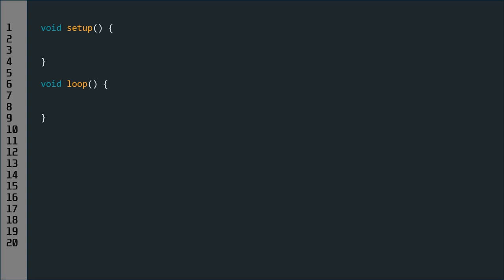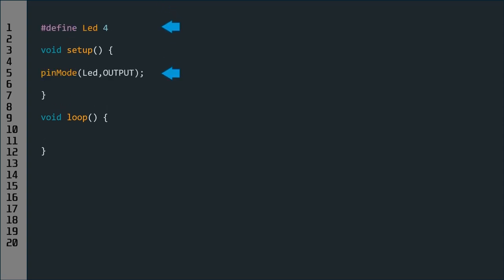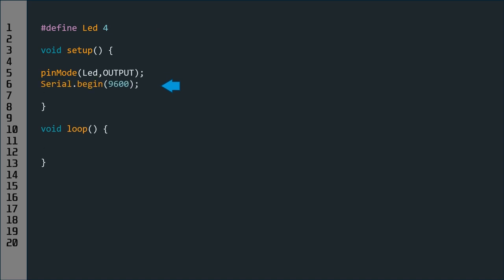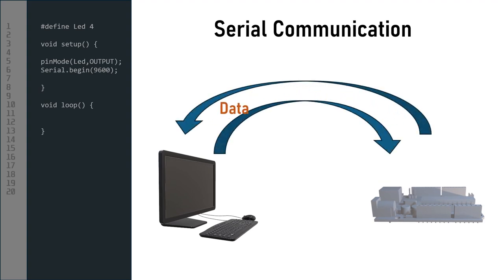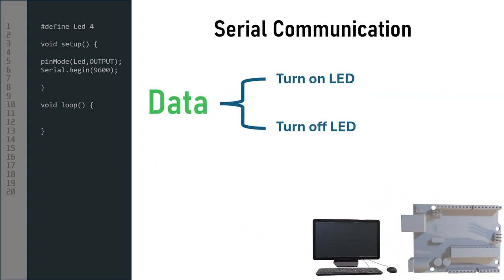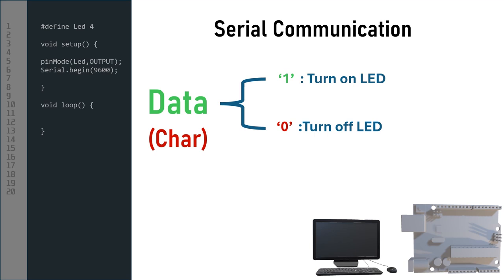For the Arduino code to control an LED from a computer, we need to use serial communication. We define the LED and initiate the serial communication at 9600 baud. Serial communication allows us to send and receive data between the Arduino and computer, and we make actions based on the data received. The type of data transmitted is a character, so the actions are to turn the LED on or off. We associate two characters for those two actions.